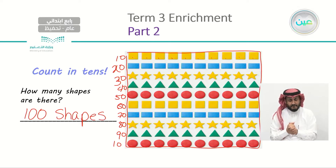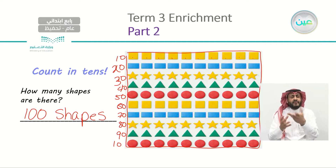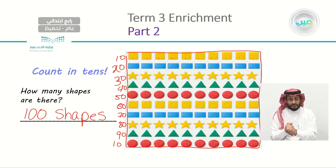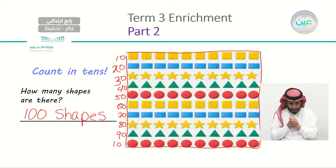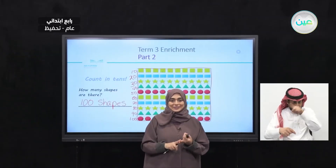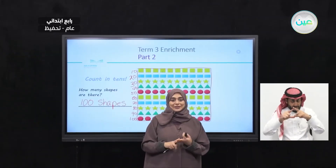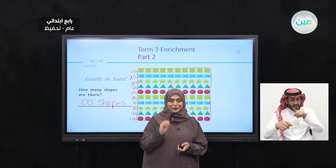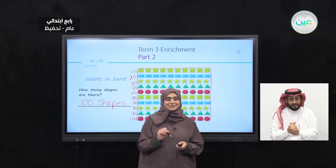What shapes do you see? Ten, twenty, thirty, forty, fifty, sixty, seventy, eighty, ninety, one hundred. There you go. So what shapes do you remember? We remember circles, triangles, rectangles, squares. You remember them, right? Excellent.